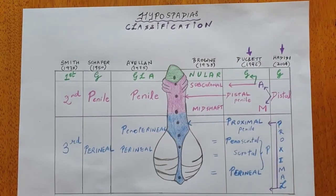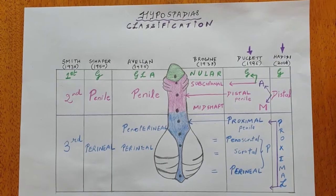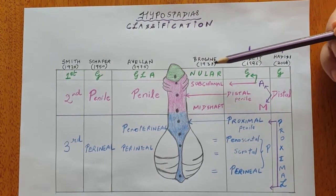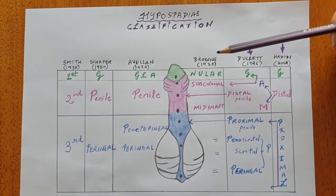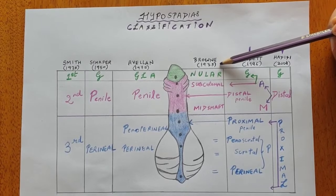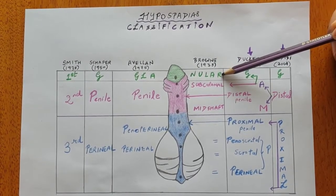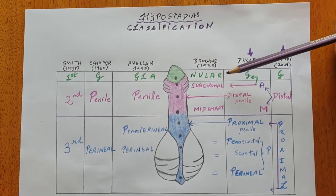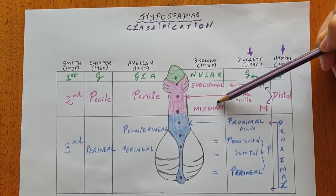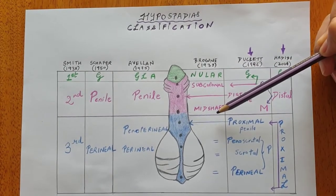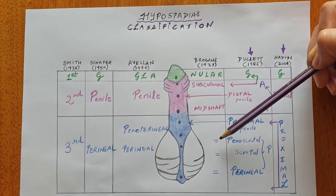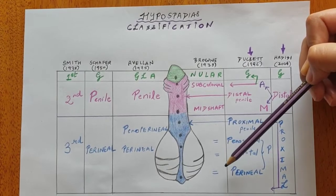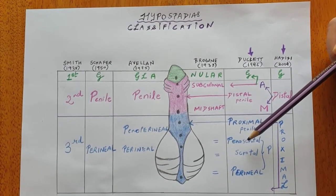The commonly used classifications, which are also asked in examinations, are Brown, Duckett, and the Hadidi classification, with Hadidi being the latest. In Brown's classification as described in 1938, the terms used were glanular, subcoronal, and midshaft. The more proximal ones were known as proximal penile hypospadias, penoscrotal, scrotal, and perineal — which is similar to what is seen in Duckett.